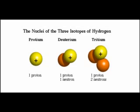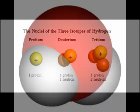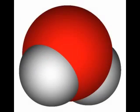Water, H2O, contains two hydrogen atoms in every molecule. A small percentage of hydrogen atoms in water have a neutron, or more rarely two neutrons. Molecules of water with extra neutrons are called heavy water.